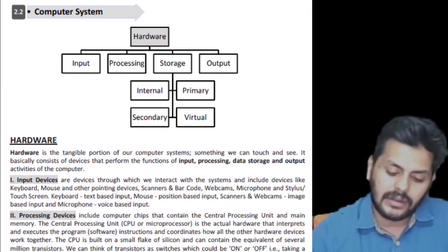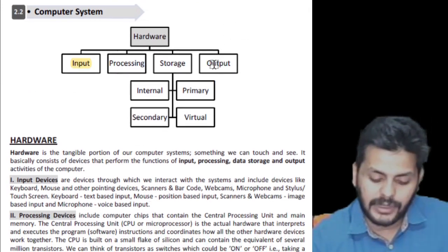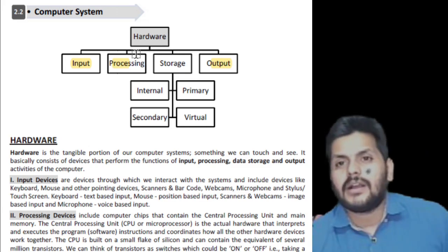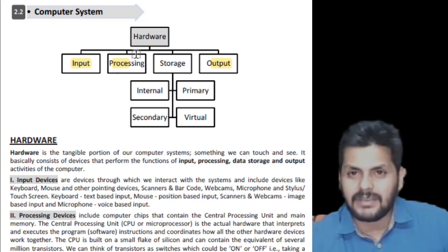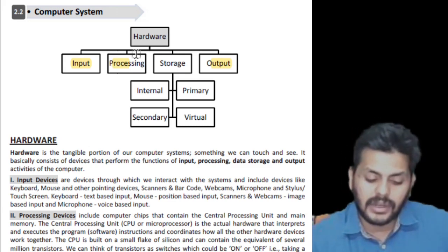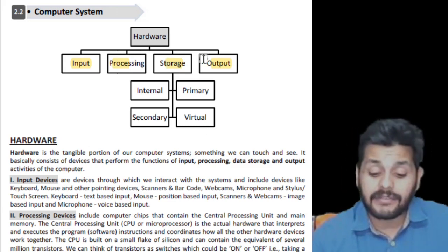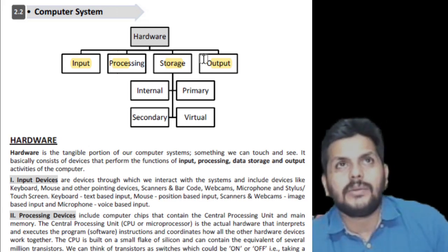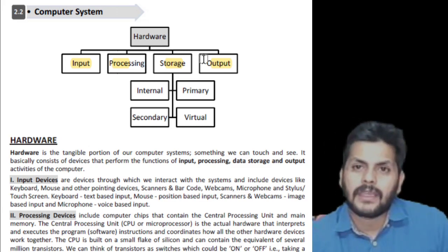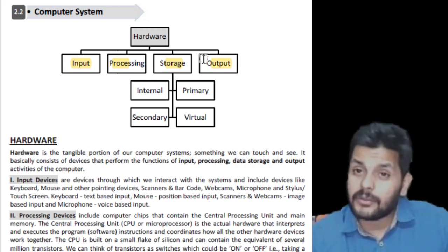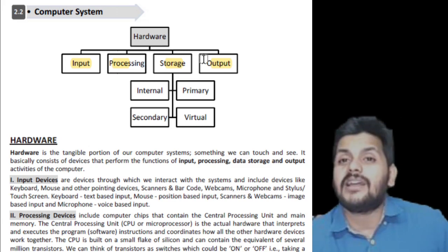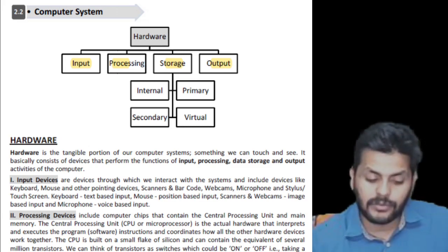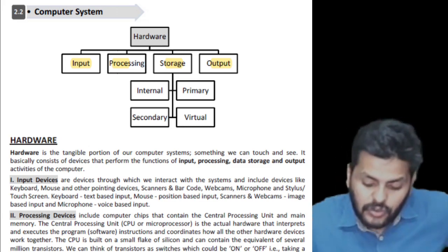Moving on to hardware — two simple things first: input and output. Then processing devices. The processing device of a computer is the CPU — Central Processing Unit. For storage devices, there are two categories: primary memory (including RAM) and secondary memory (like a hard disk, 320 GB or 500 GB). There is also internal memory and primary memory.